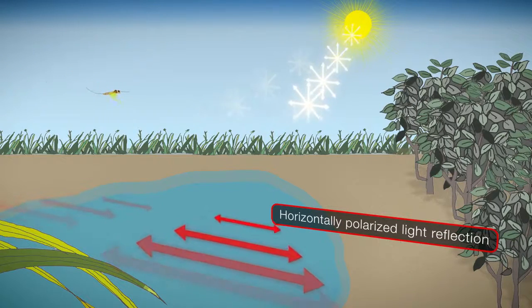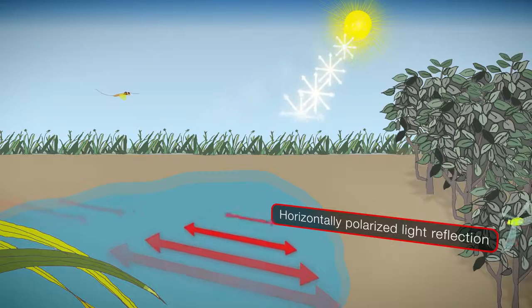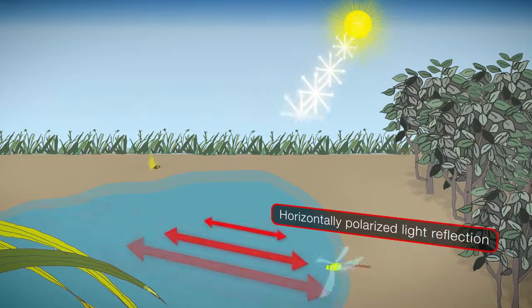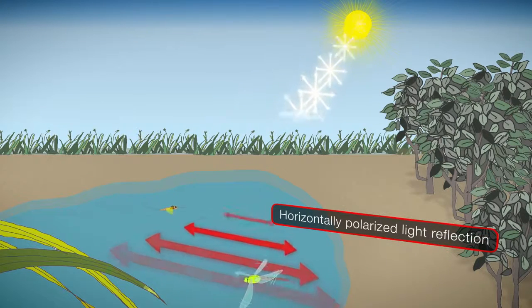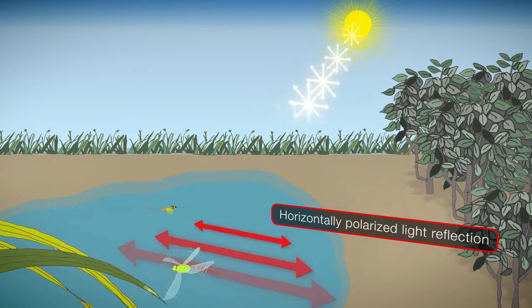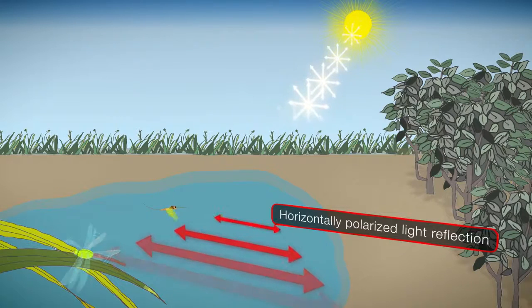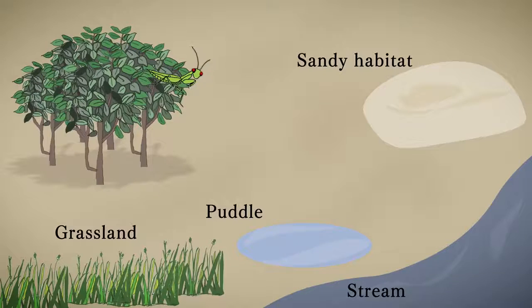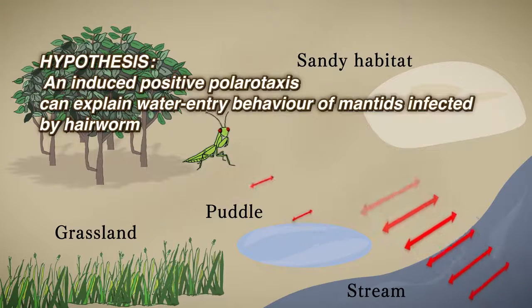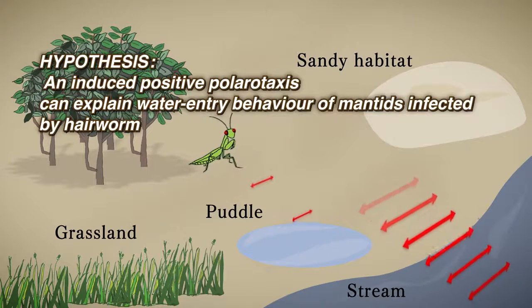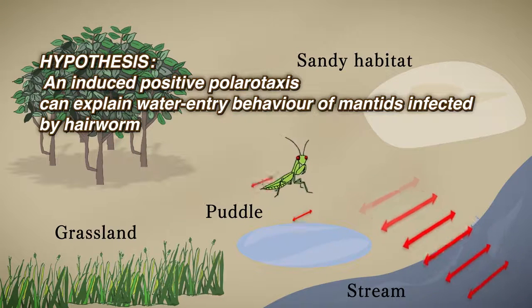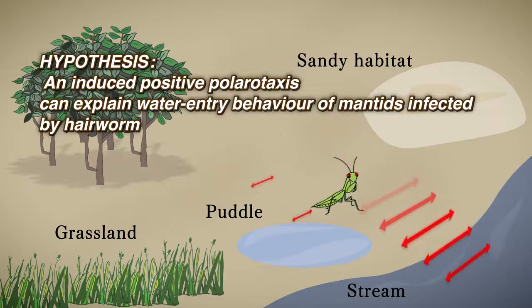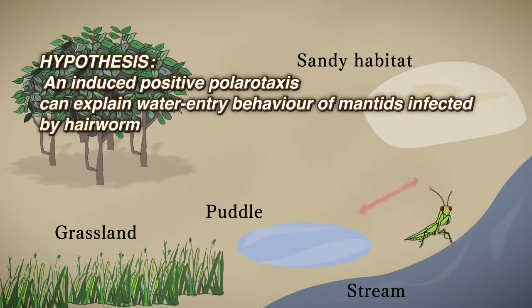Many insects actually use the horizontally polarized light to either seek out or avoid water habitats. Thus, we hypothesize that an induced positive polarotaxis can explain the water entry behavior of a terrestrial insect host infected by a hairworm.